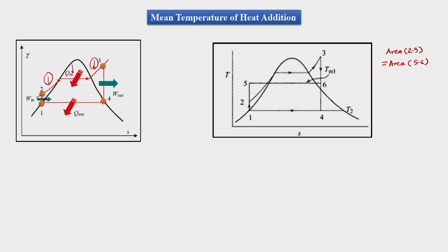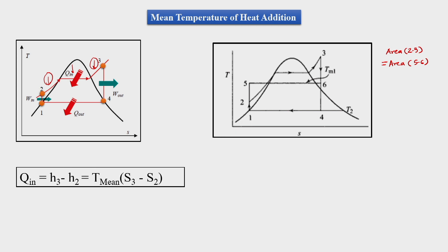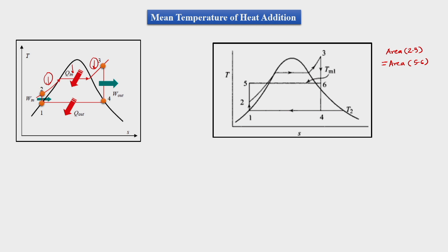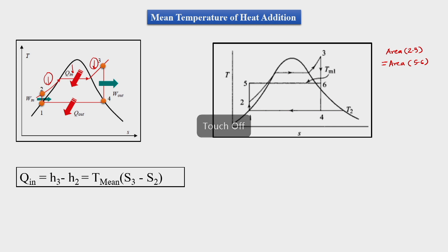The peculiarity of process 5 to 6 is that it is a constant temperature process. We are interested in finding the mean temperature of heat addition in the boiler. Heat addition q_in equals h3 minus h2, and h3 minus h2 equals T_mean times (s3 minus s2), since process 5 to 6 is at constant temperature.